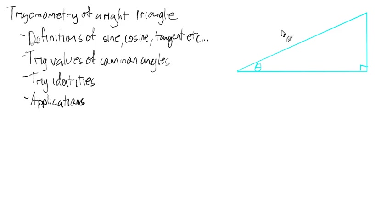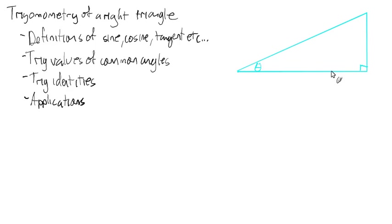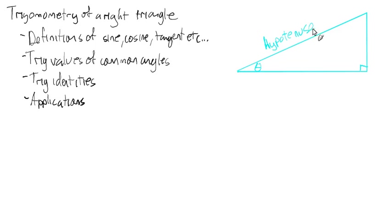In order to define sine, cosine, and tangent in the context of a right triangle, first we need to know what a right triangle is — it's a triangle that has a right angle, a 90-degree angle. No matter which angle we choose, the side opposite the 90-degree angle is always called the hypotenuse — spelled with an H — the longest side, the side across from the 90-degree angle.